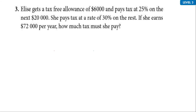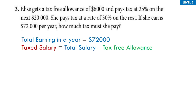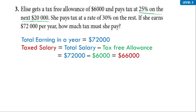Next question, Question 3. Elise gets a tax-free allowance of $6,000 and pays tax at 25% on the next $20,000, then at a rate of 30% on the rest. If she earns $172,000 per year, how much tax must she pay? Her earning is $172,000 per year. The taxed salary is total salary minus the tax-free allowance, which gives $166,000.